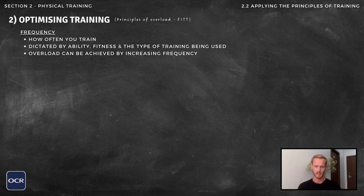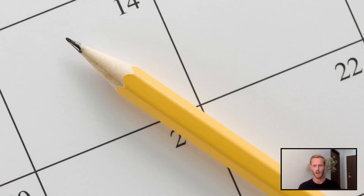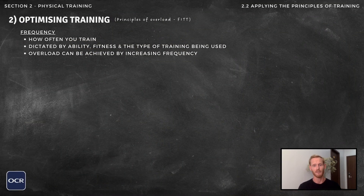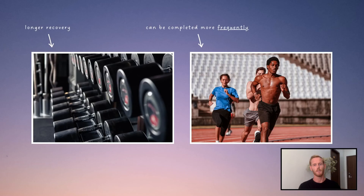The F stands for frequency, which refers to how often you train. Overload can be achieved by increasing the frequency of training — for example, progressing from two to three weight training sessions per week. How often a performer should train is dictated by several factors, including their ability and fitness level, and the type of training being used. For example, longer recovery intervals may be required between weight training sessions than between continuous training sessions.